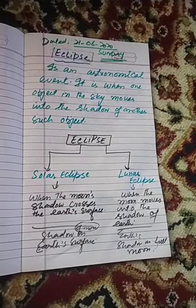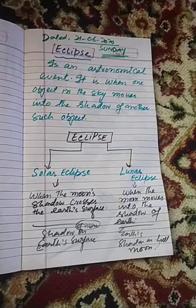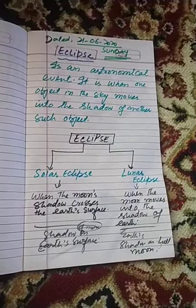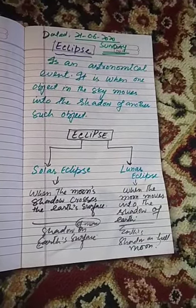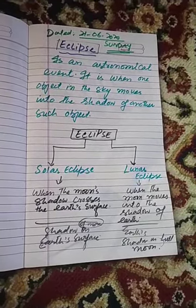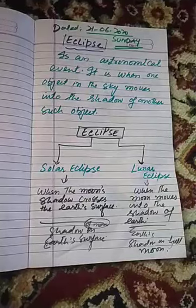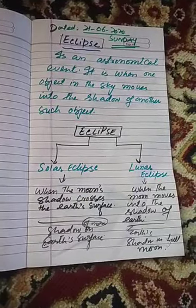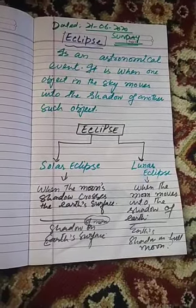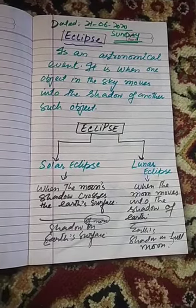Bismillahir Rahmanir Rahim. Dear students, Assalamu Alaikum. I am your teacher Malik Zubair and today is 21st of June 2020, it's Sunday. As you know, today was a solar eclipse, so I decided to give a lecture on what are eclipses and what are its types.